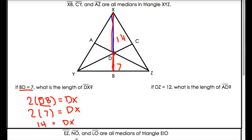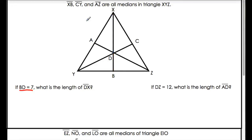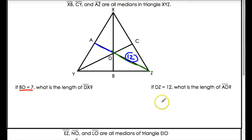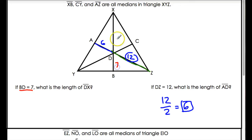Second part: if DZ equals 12 — and DZ is the vertex-to-centroid segment — what is AD, the smaller part? If DZ is 12, then AD is half of 12. So 12 divided by 2 gives us 6. The smaller part AD is 6. To summarize: 7 and 14 — this is half of that; and 6 and 12 — AD is half of DZ.